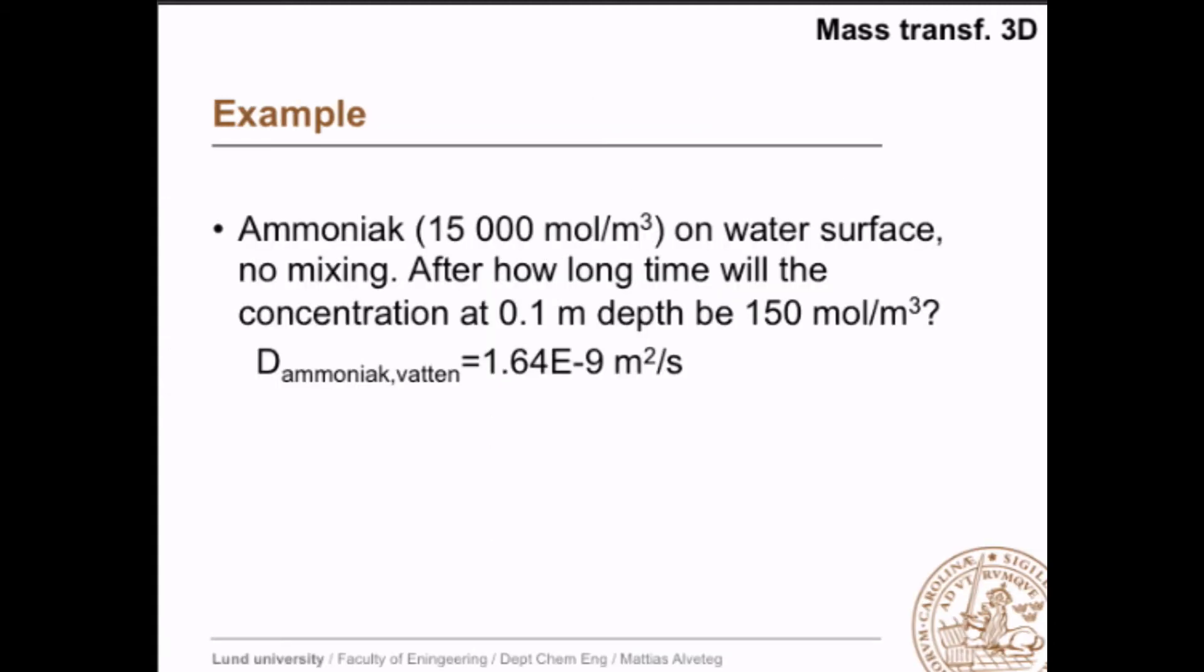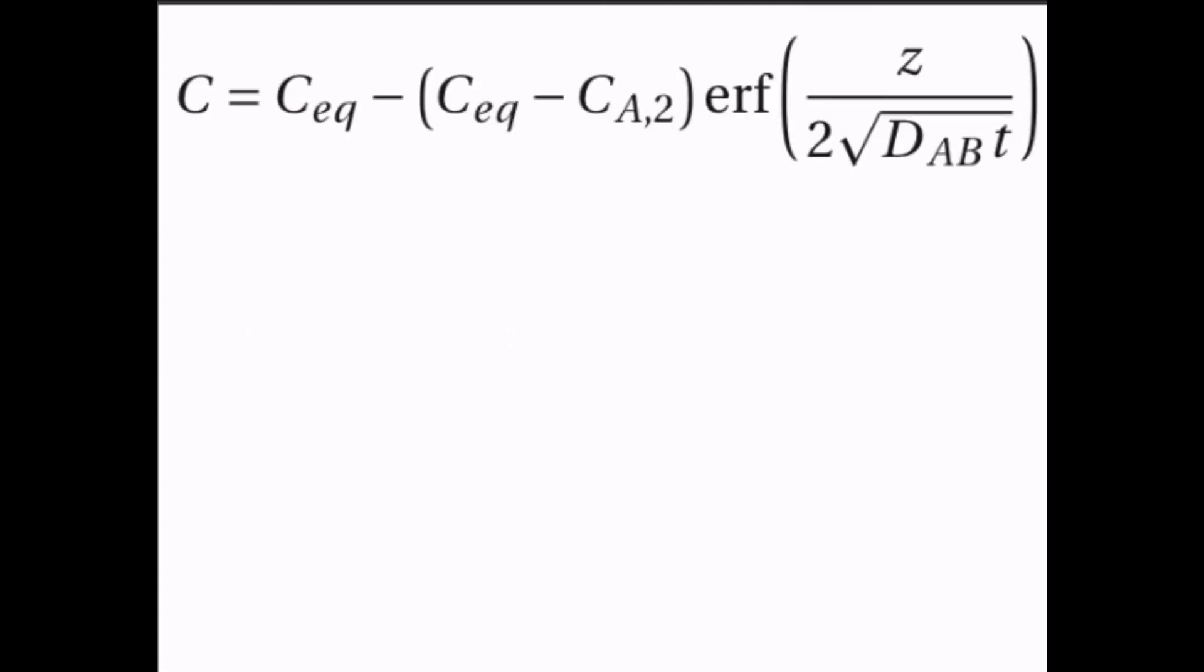And let's do an example. We have ammonia 15,000 mol per cubic meter that's spilled out on top of a water surface, and there is no mixing, so there is no convection. So it's simply diffusion into this water, and the question is how long time will it take for the concentration at 0.1 meter depth, so 10 centimeters depth, to become 150 mol per cubic meter. And the diffusivity is 1.64·10⁻⁹ square meter per second. Okay, so we have this equation here.